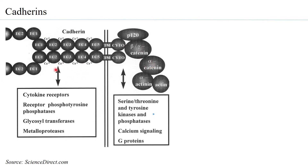Cytokine receptors can interact with cadherins. They can also enable activation through glycosyl transferases and metalloproteases. This can lead to calcium signaling or G-protein-based signaling. Like all cell adhesion molecules, cadherins are able to carry out inside-out signaling and outside-in signaling.